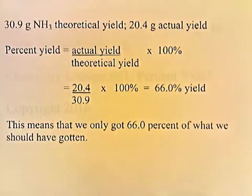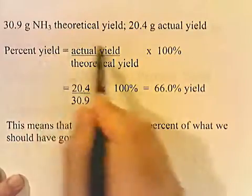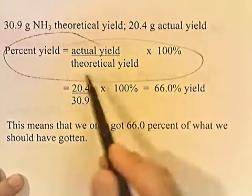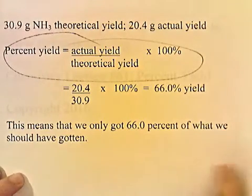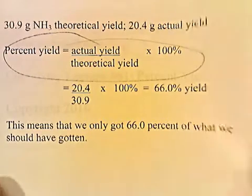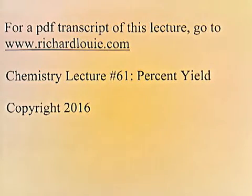Percent yield problems are just like mass-mass problems — they just have the extra step of plugging numbers into the percent yield formula, taking a number that's given to you and dividing it by a number that you calculated. It's just a slight extension of a mass-mass stoichiometry problem. For a PDF transcript of this lecture, go to www.richardlui.com. This has been Chemistry Lecture Number 61, Percent Yield.